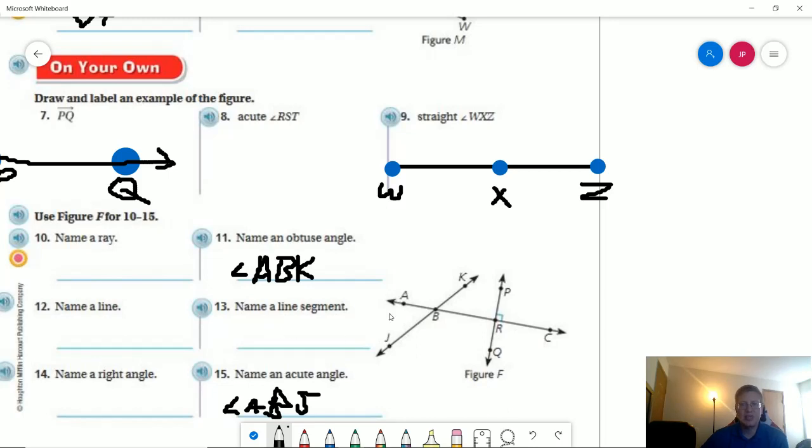And then line segments. Again, they want something that has a definite start and end point. So the one that would match that most accurately, because we're not going to continue past, would be BR.